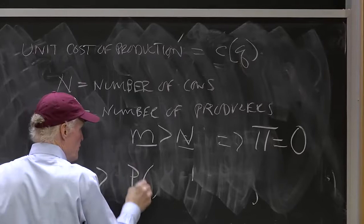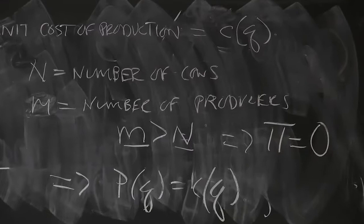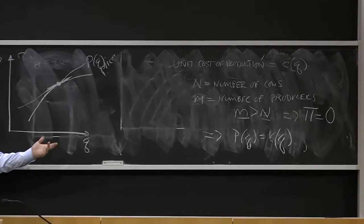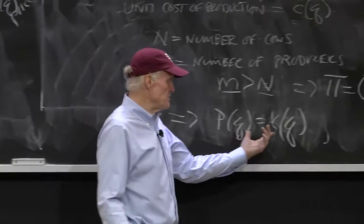Which implies P of Q got to be equal to C of Q. That is, the price you can charge for quality level Q has to be equal to C of Q. You can't charge any more than that, otherwise people would make money. You can't charge less than that because then you would lose money. So the only prices that could exist in this marketplace would be equal to the cost of production.